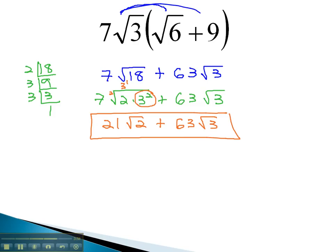Distributing with radicals works just like distributing with normal variables. We multiply the outside and inside numbers together and make sure our final answer is completely reduced.